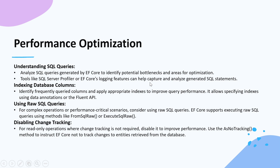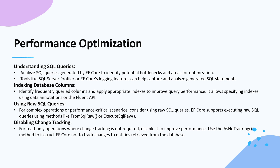Performance optimization in EF Core is a very important topic that will be asked in every interview. First, understand the SQL queries — analyze SQL queries generated by EF Core to identify potential bottlenecks, using tools like SQL Profiler or EF Core's logging feature. Second, use database column indexing — identify frequently queried columns and apply appropriate indexes to improve query performance, specifiable via data annotations or the Fluent API. Third, use raw SQL queries for complex operations or performance-critical scenarios.